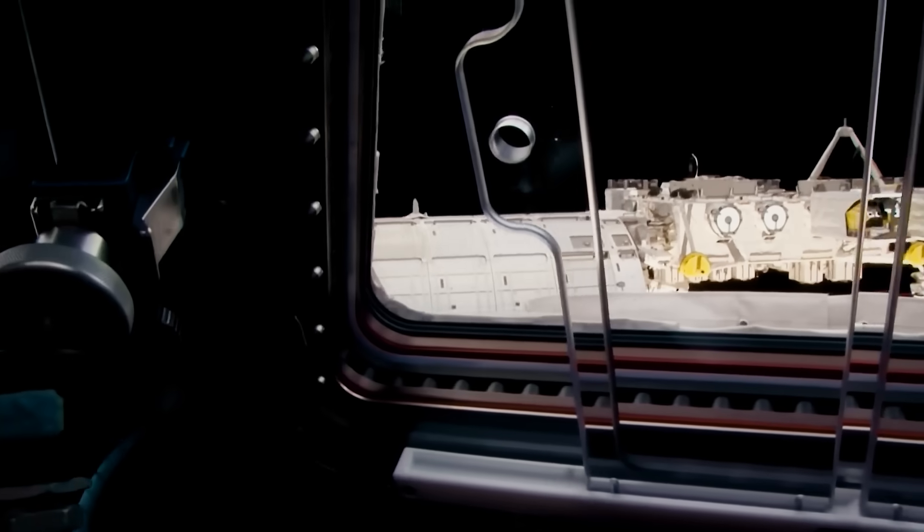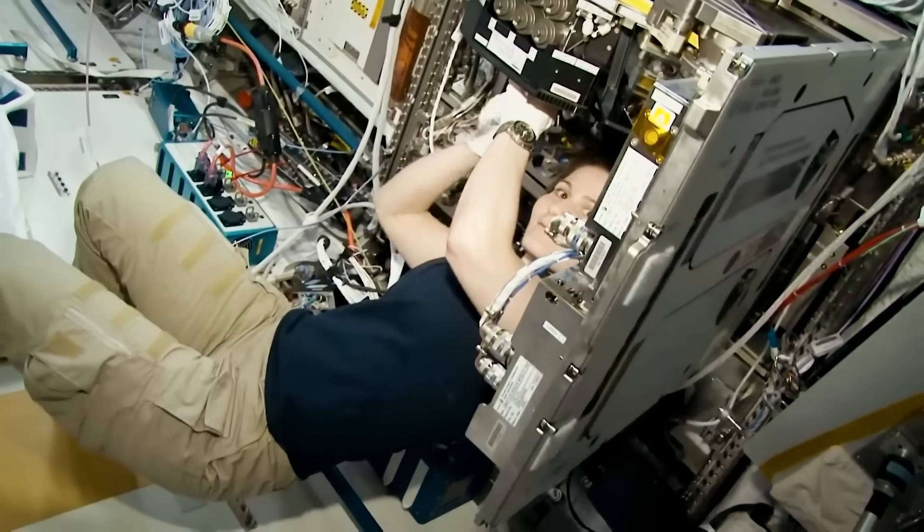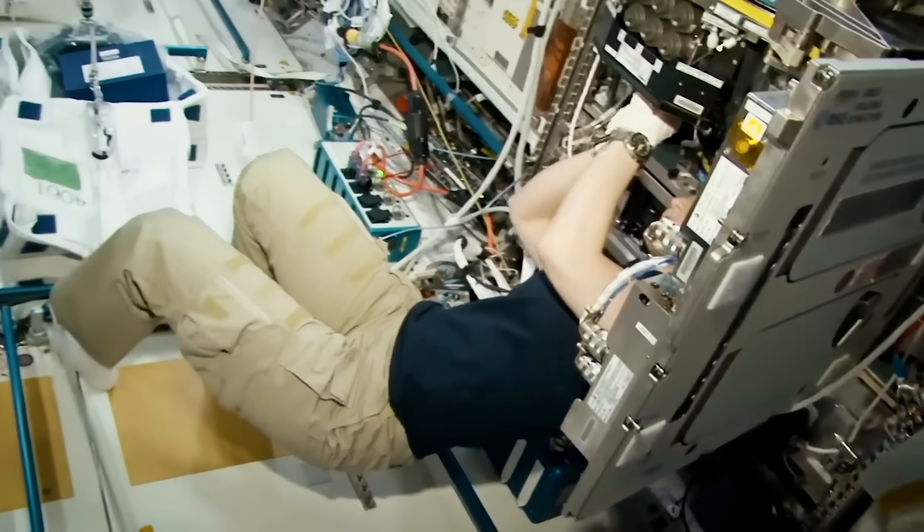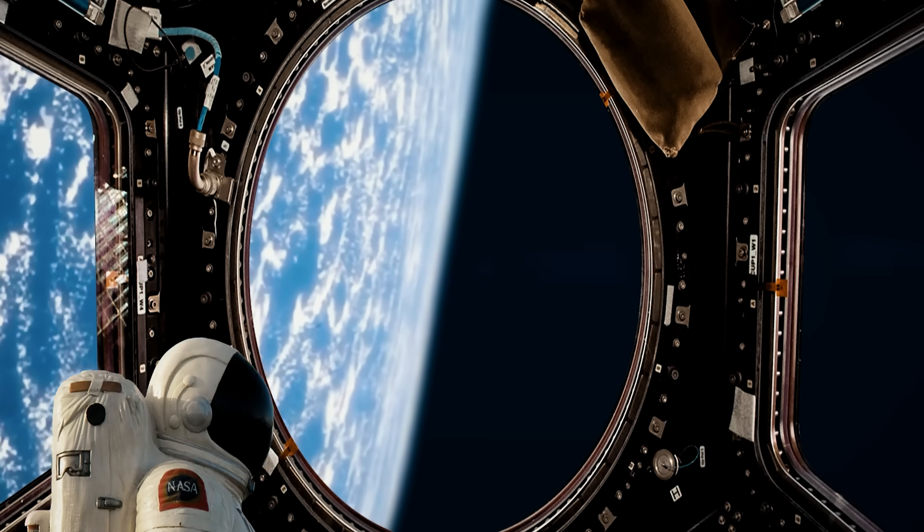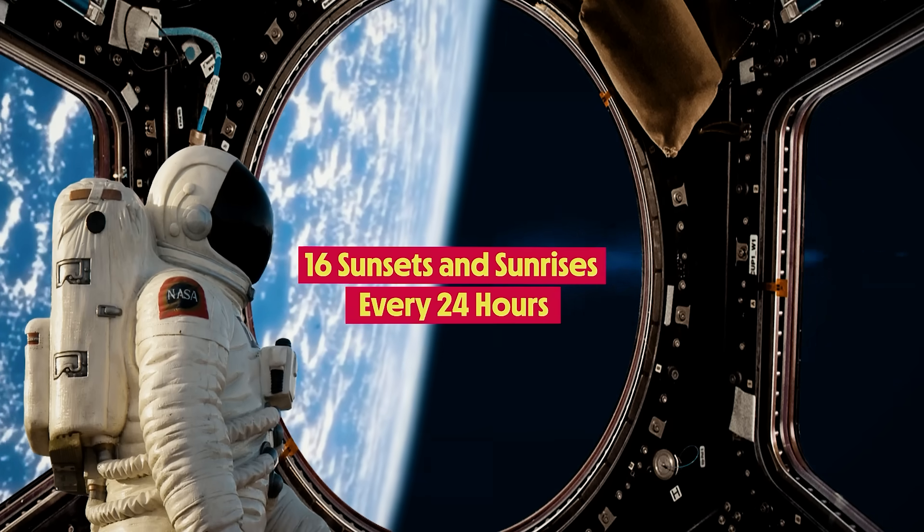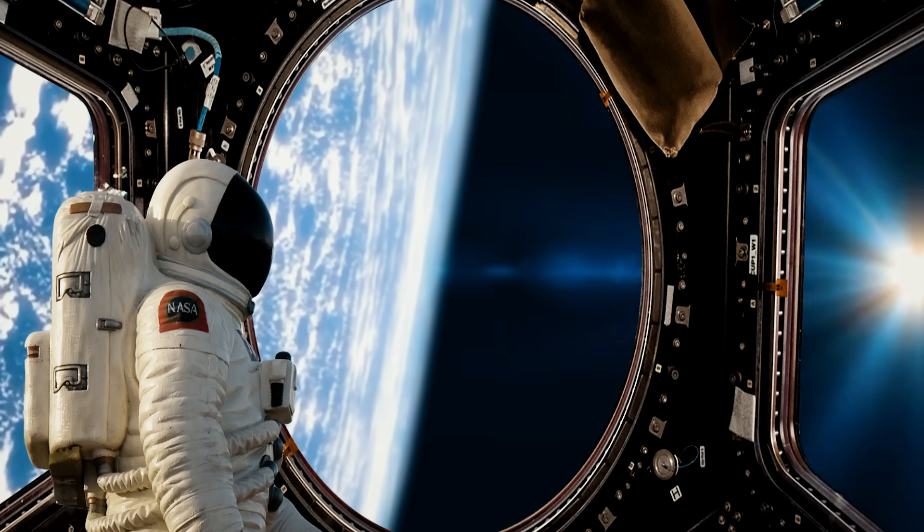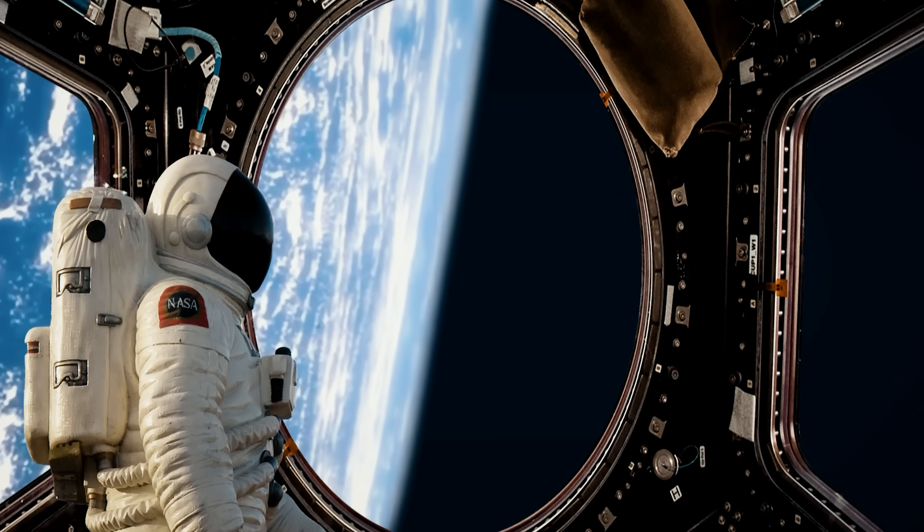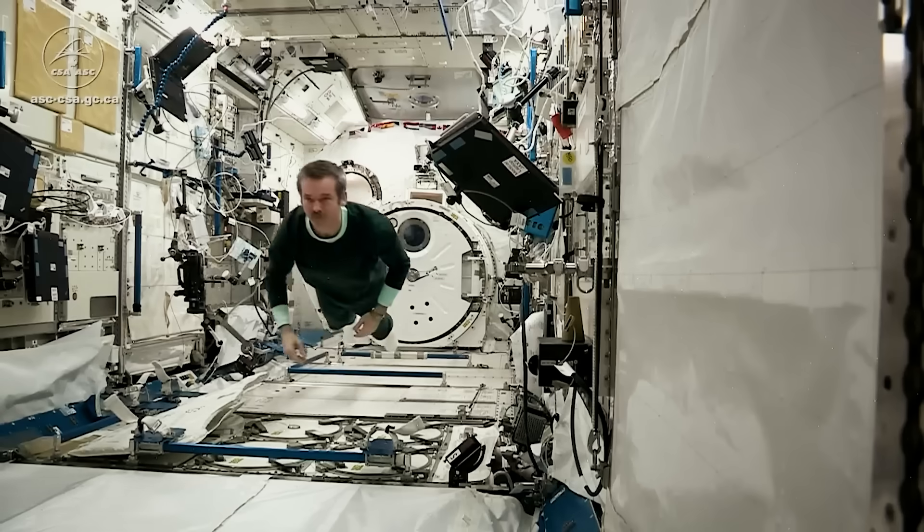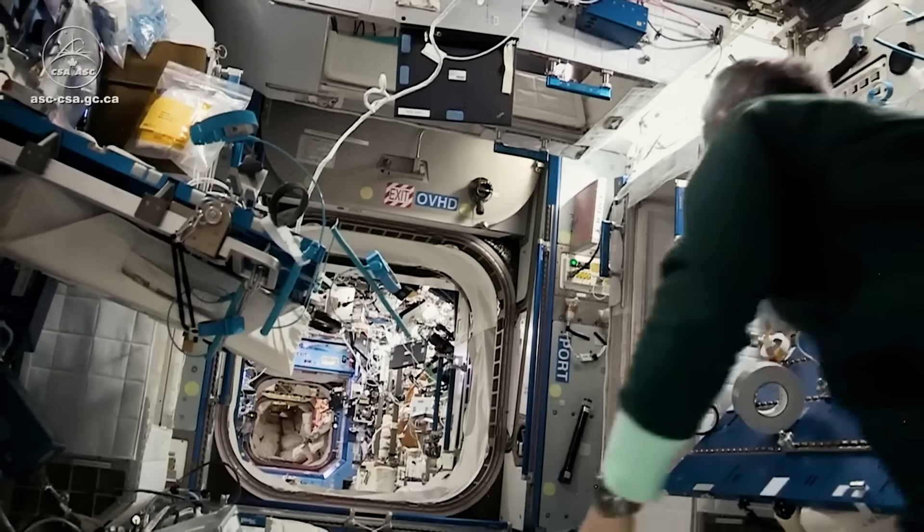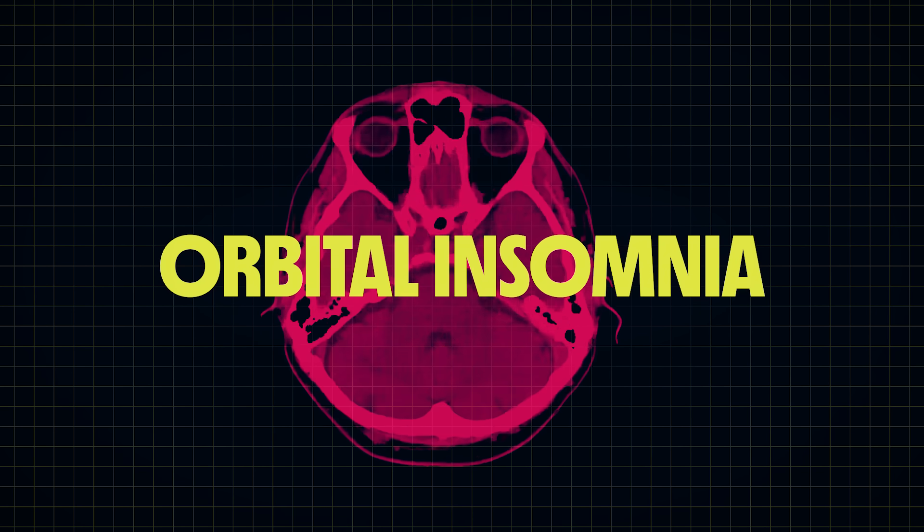Once we are settled into the station, it's time to think about getting to work. Astronauts don't come here for leisure time. Every hour of every day is strictly scheduled, and there is lots to do. But what is a day anyway? The ISS orbits the Earth once every 90 minutes. That means astronauts experience 16 sunrises and sunsets every 24 hours. This rapid-fire day-night cycle can seriously mess with a person's internal clock, and that's actually very bad for your health. To counter this, the crew follows a standard 24-hour Earth day. The ISS uses special lighting systems that mimic natural sunlight to help maintain their sleep pattern. That's how they avoid a condition known as orbital insomnia that plagued early space explorers.